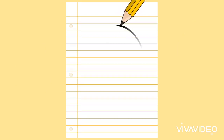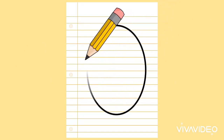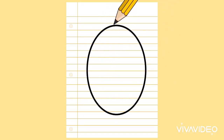What shape am I drawing? An oval. And how many corners does an oval have? That's right, no corners.